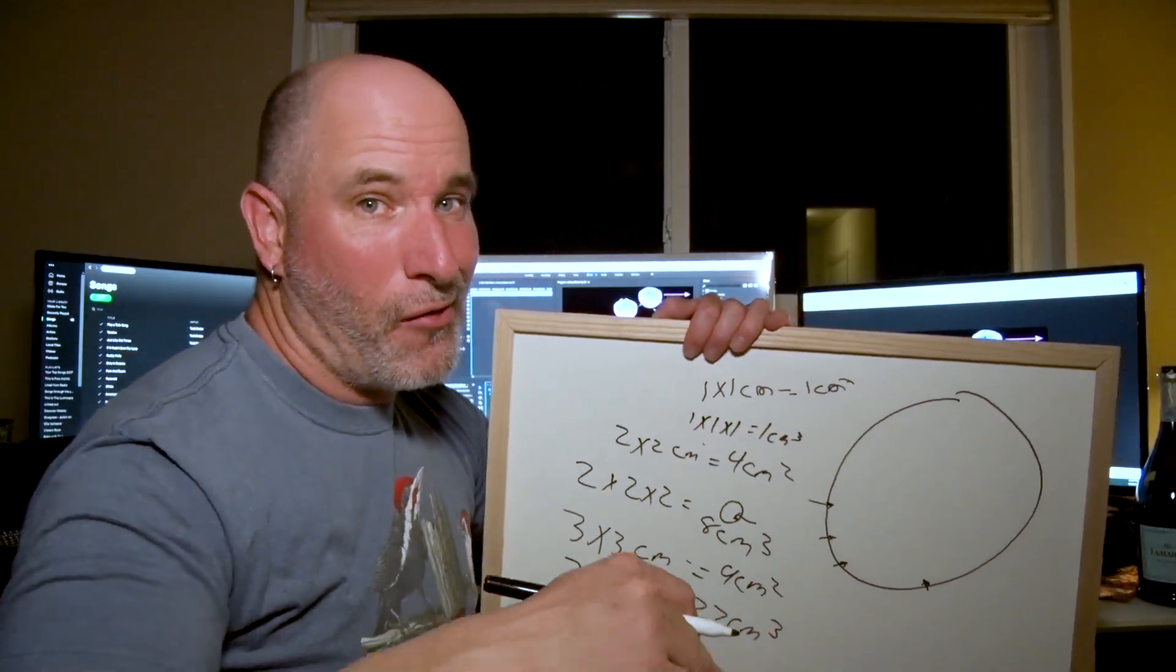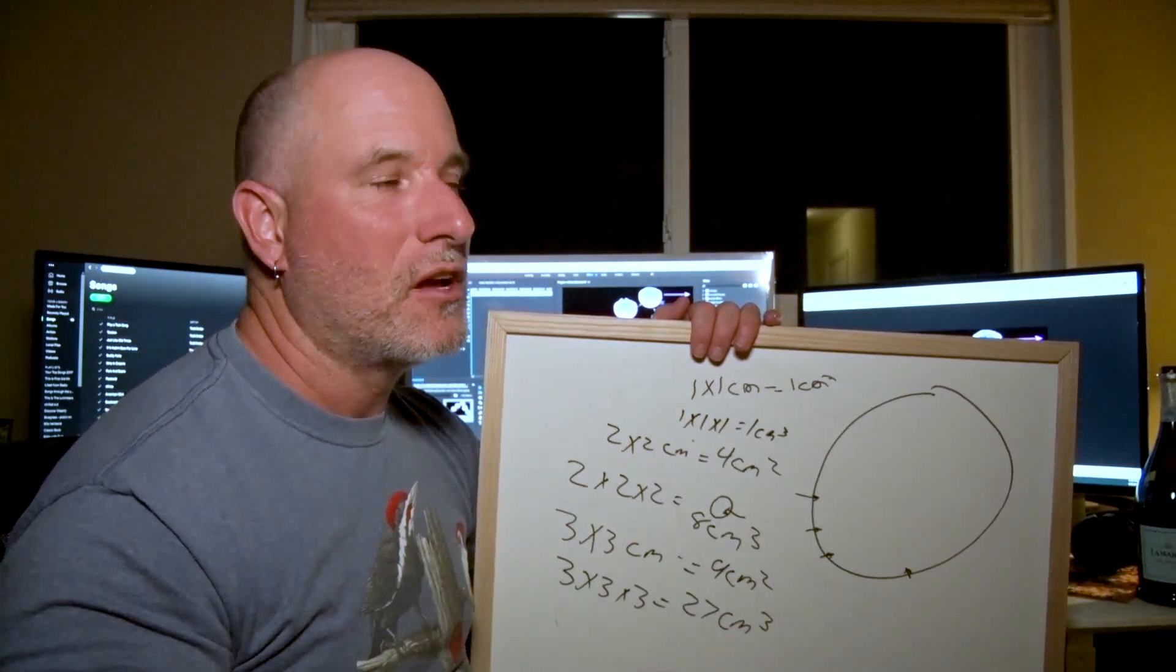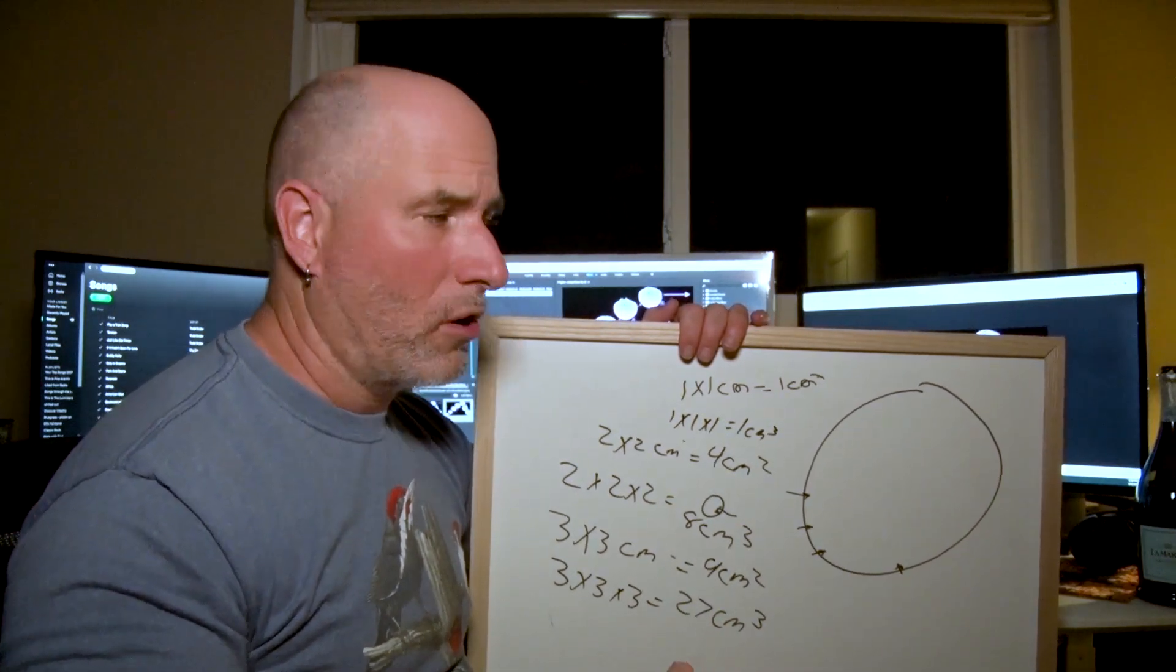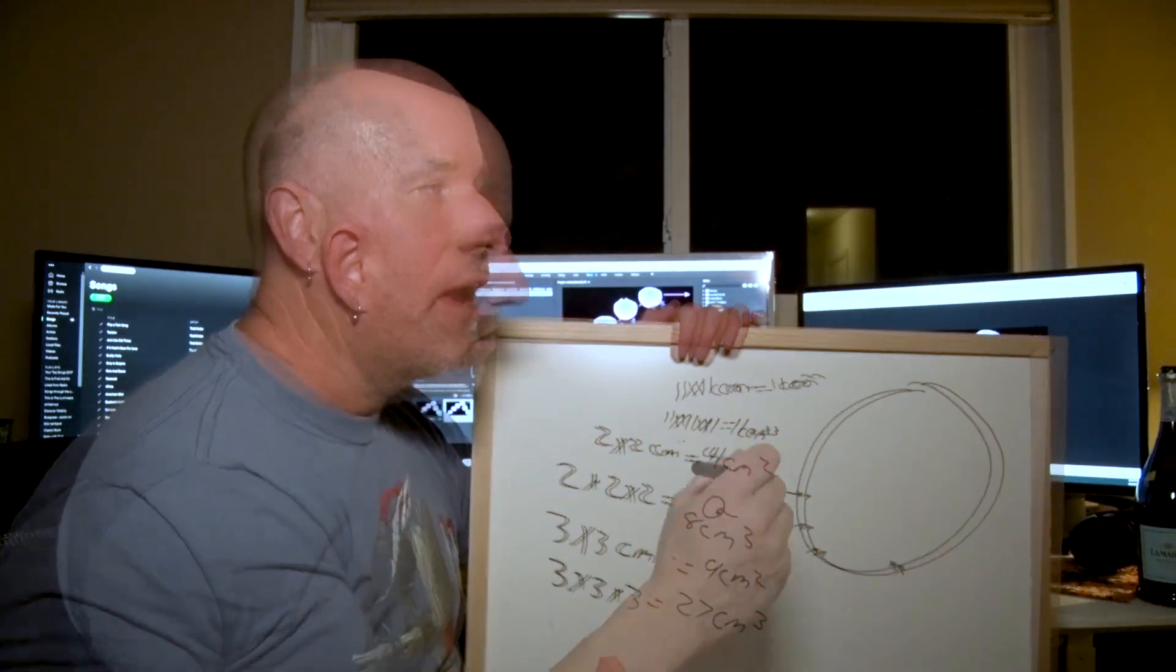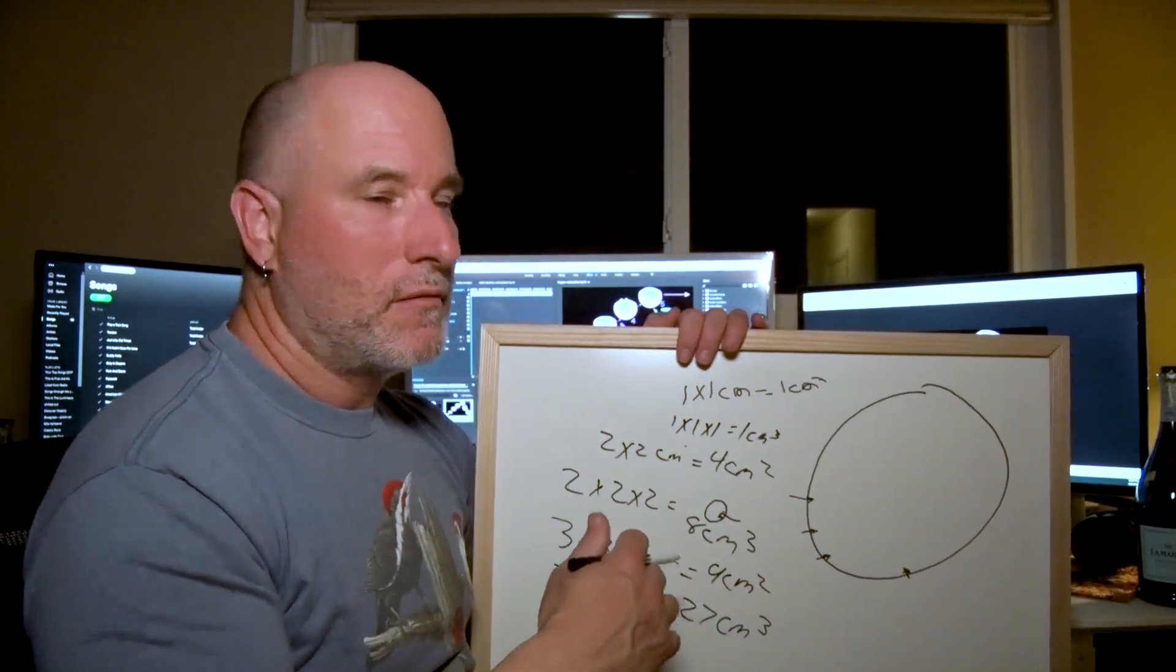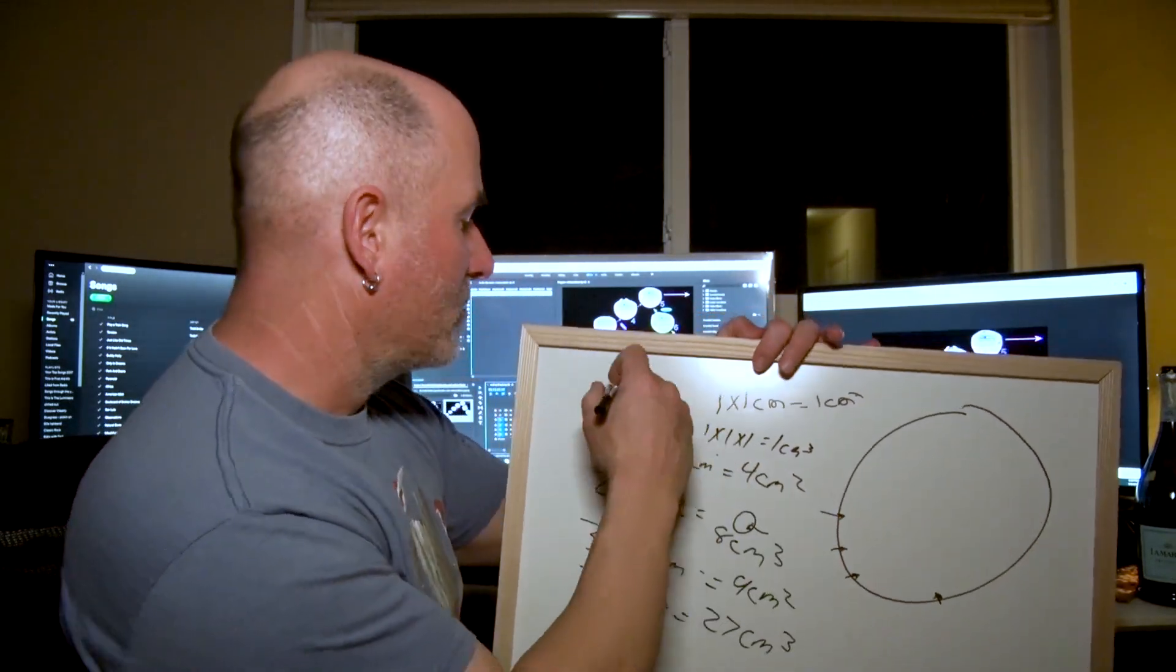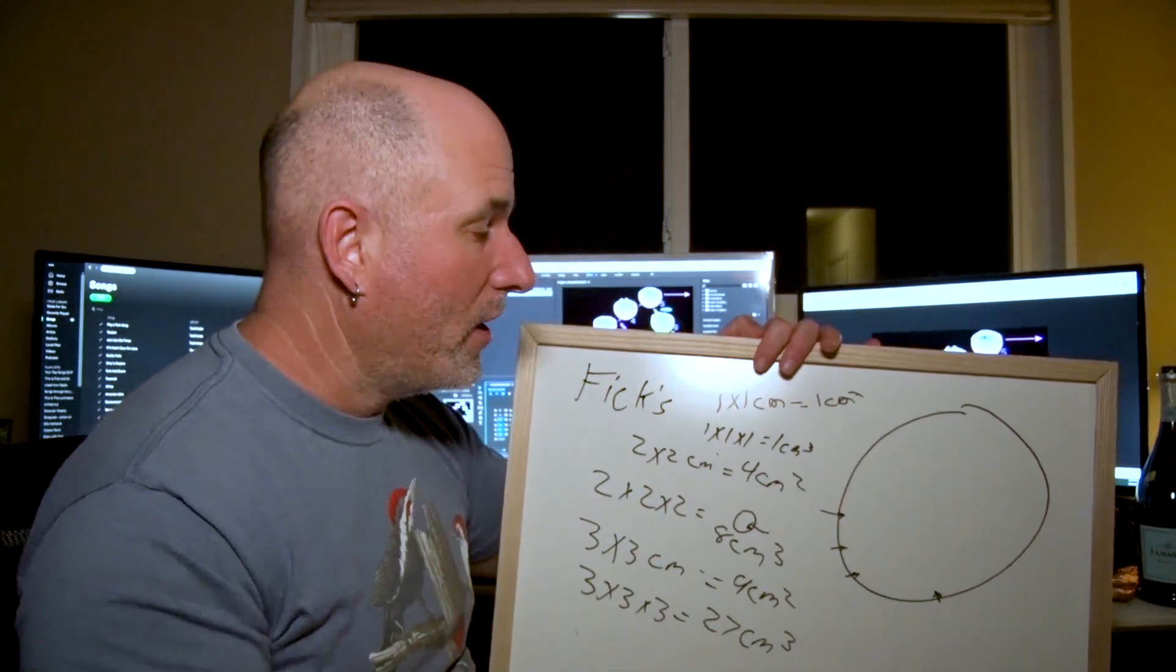There are entire multicellular animals that are thousands of cells, millions of cells, parasites, flatworms. These things survive just fine based on diffusion. So the point that I'm making here is diffusion is not the answer at all.